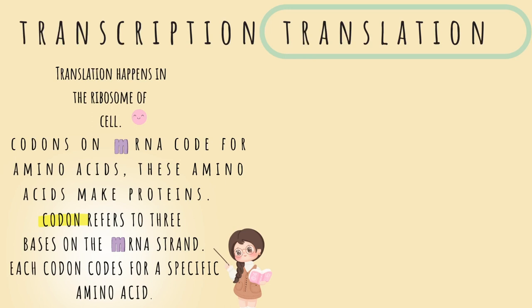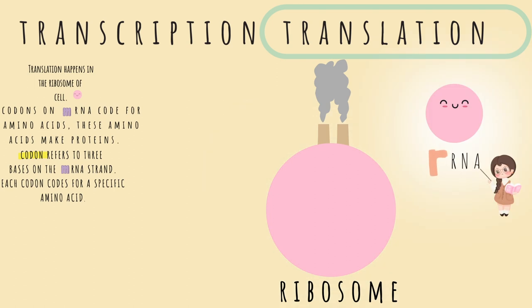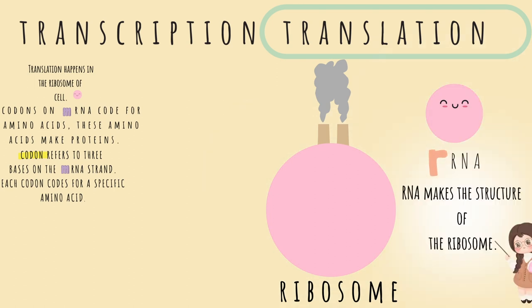Let's take a close look at this process. Here is our ribosome — it's much like a manufacturing plant because proteins are made here. This is rRNA, whose main function is to make the structure of the ribosomes. Ribosomes are made of proteins and rRNA, hence the name ribosomal RNA.